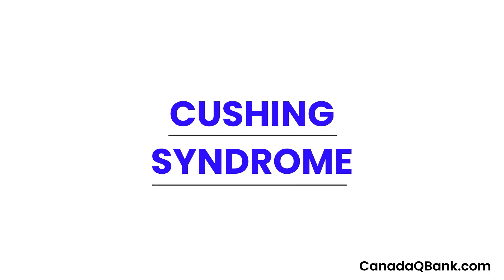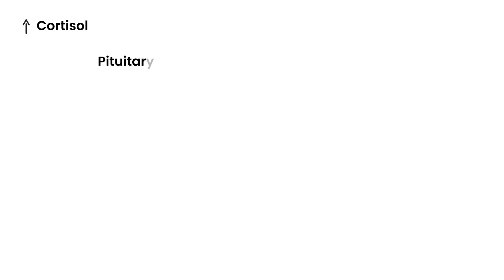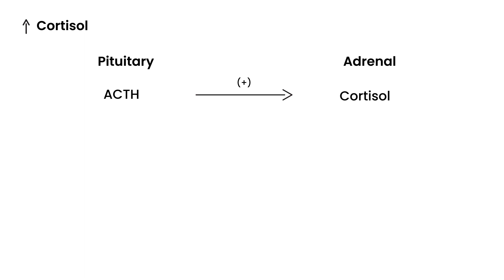Cushing's syndrome is essentially a disorder in which you have increased levels of cortisol. This can happen either because of a problem with the pituitary gland or the adrenal gland. The adrenal gland secretes several hormones, one of which is cortisol — that's at the heart of this syndrome. The pituitary gland releases ACTH, and ACTH stimulates the production of cortisol from the adrenal gland.